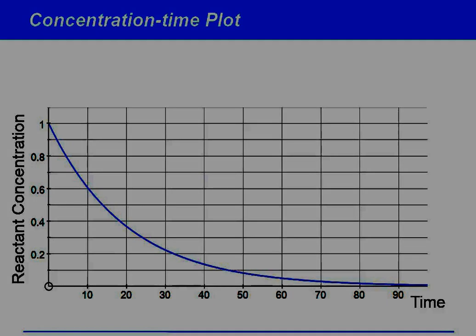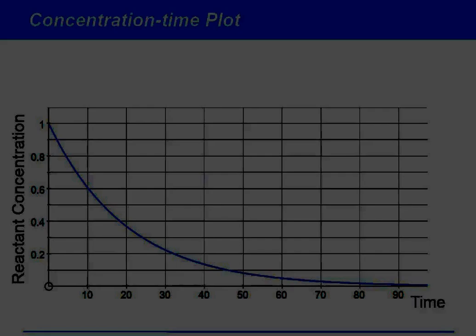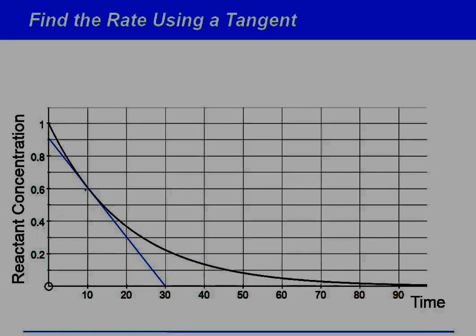So we start with a concentration-time plot and then what we need to try and do here is draw some tangents. So here's the first tangent I've just put onto the curve there. At this concentration here, which is a concentration of 0.6 moles per decimeter cubed, then we can calculate the gradient of this tangent. So this is around about 0.9, that's about 30.